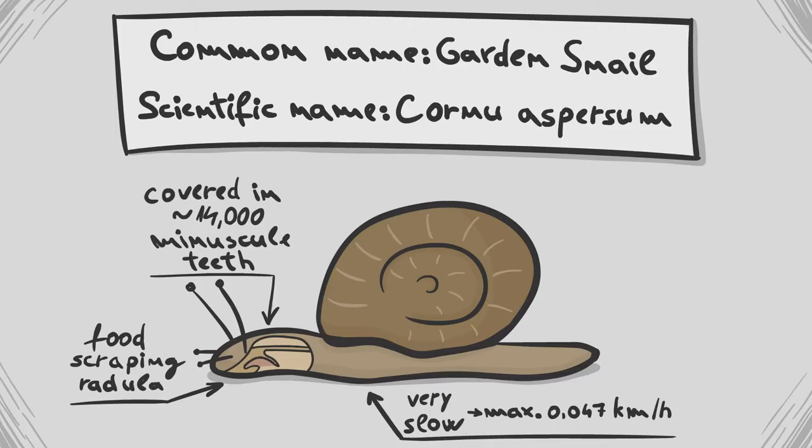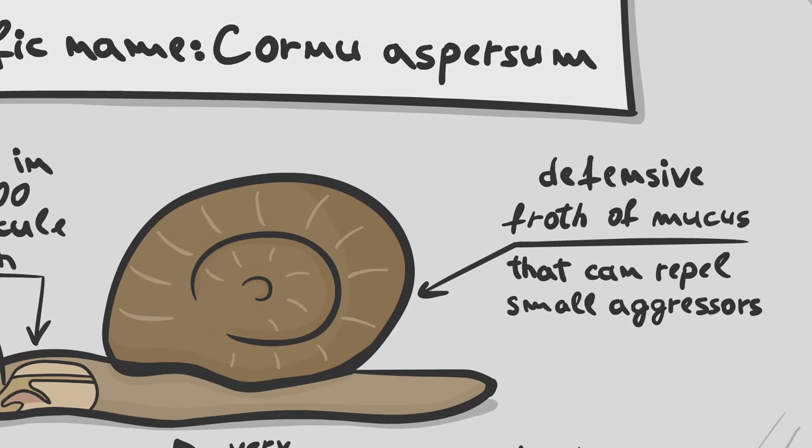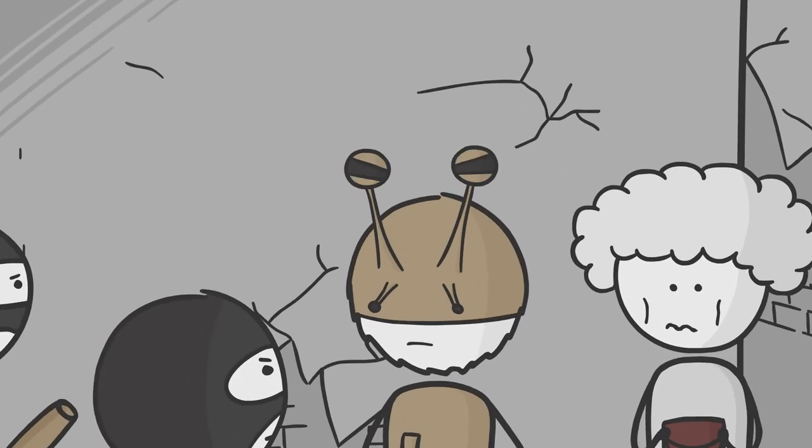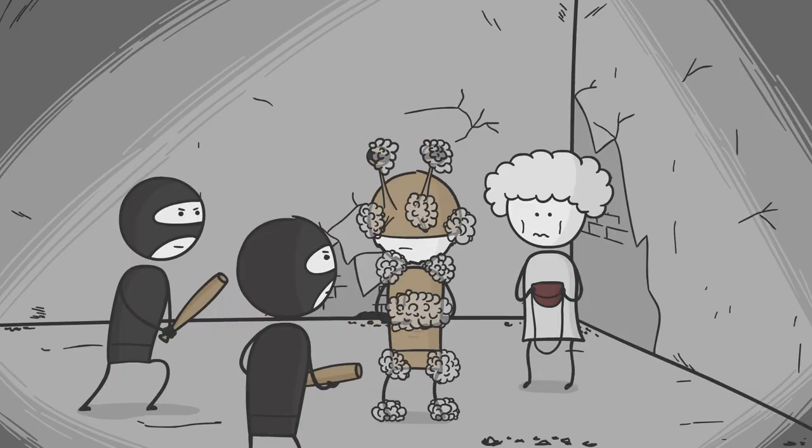And finally, when threatened, garden snails can produce a defensive froth of mucus that can repel small aggressors, so you would be able to fend off bad guys by covering yourself in a repulsive pile of snail slime.